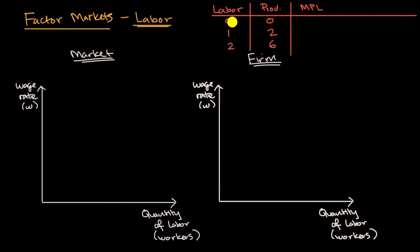That first worker is able to produce an incremental two. We went from zero to two. But that second worker, by adding them, now you're able to produce an incremental three units. And so here, this might be due to specialization, things like that. But over time, you might have diminishing marginal products of labor.